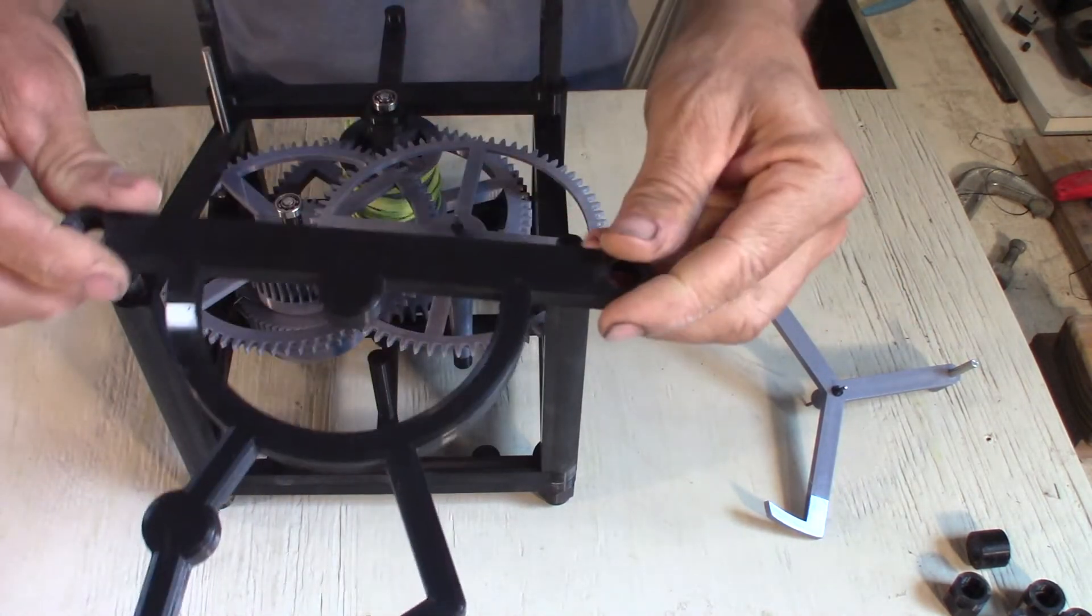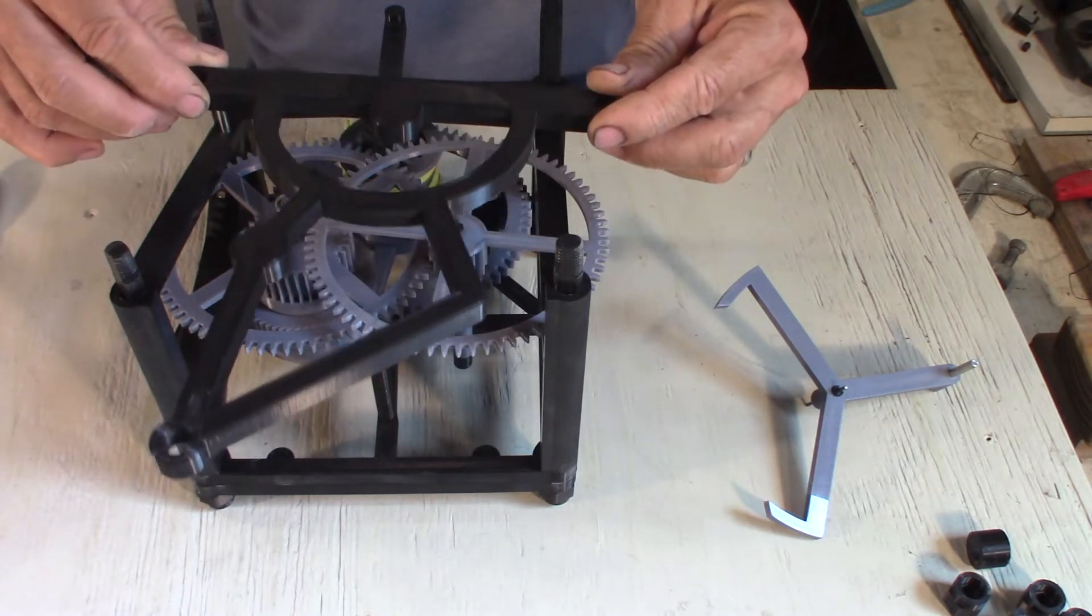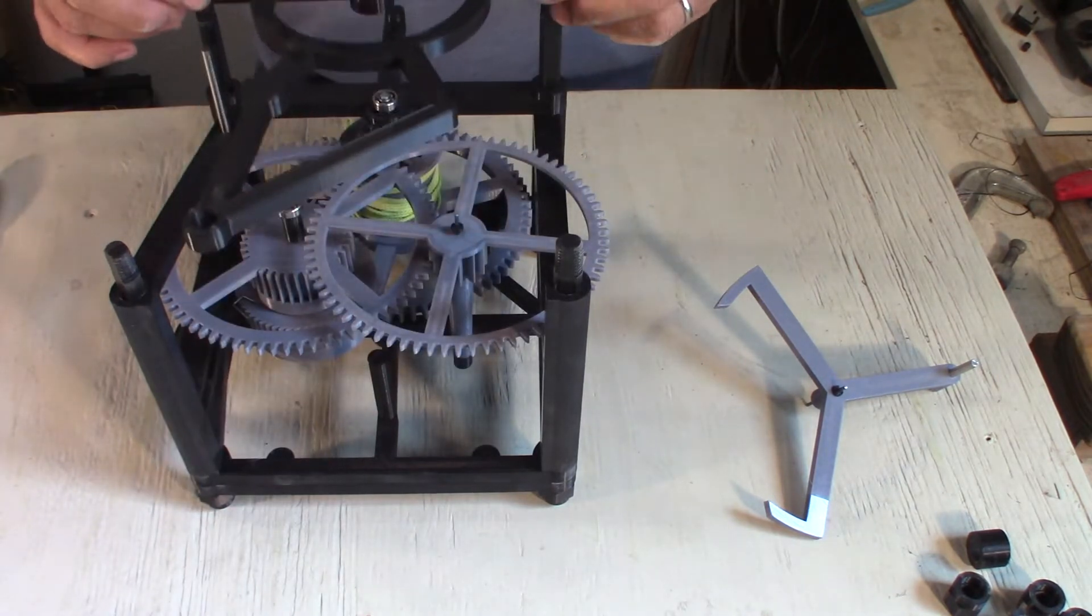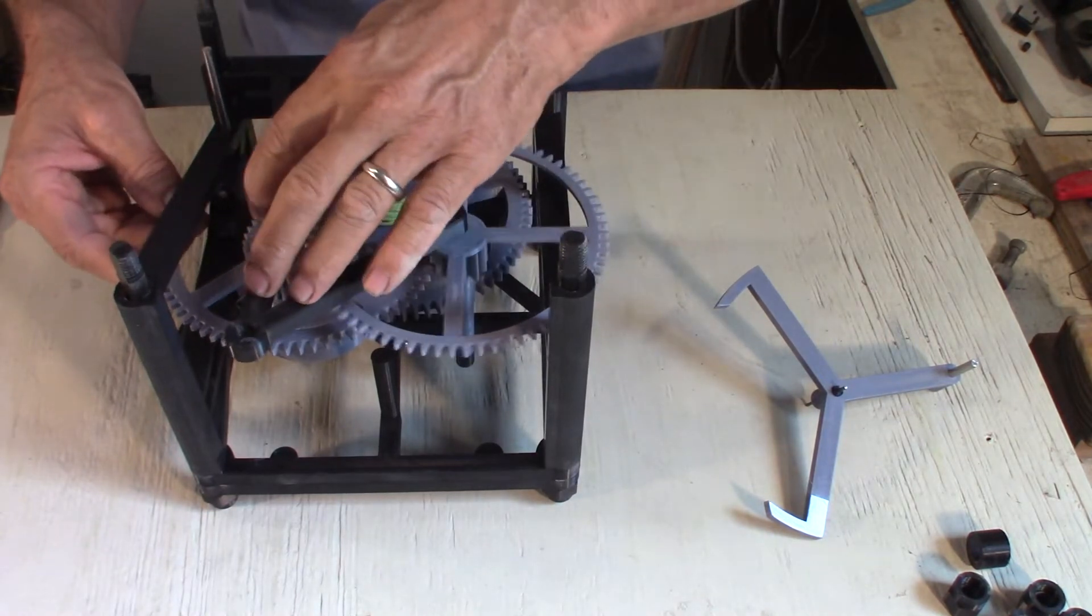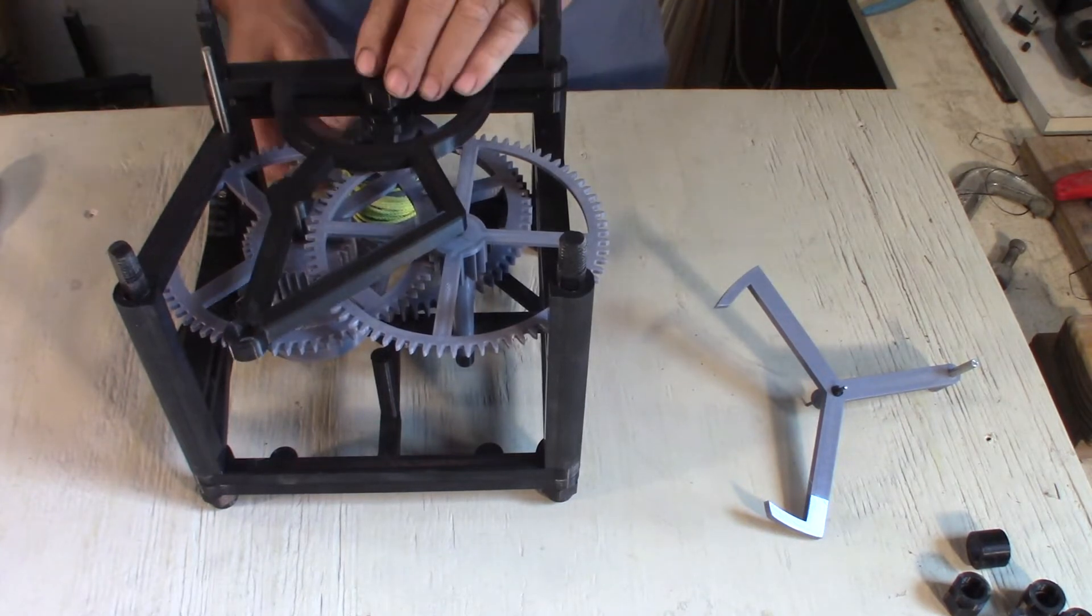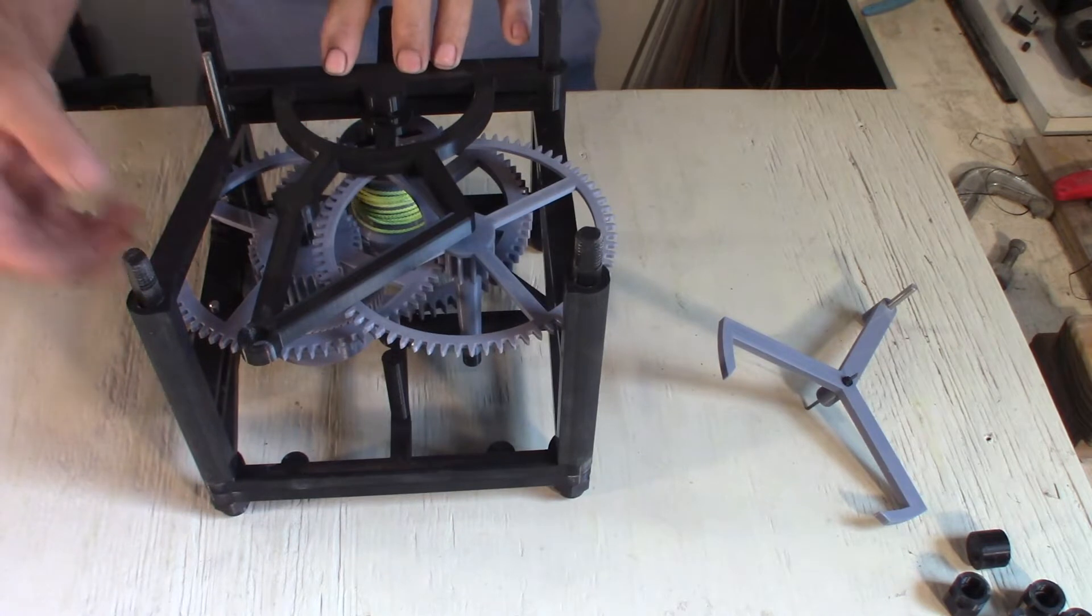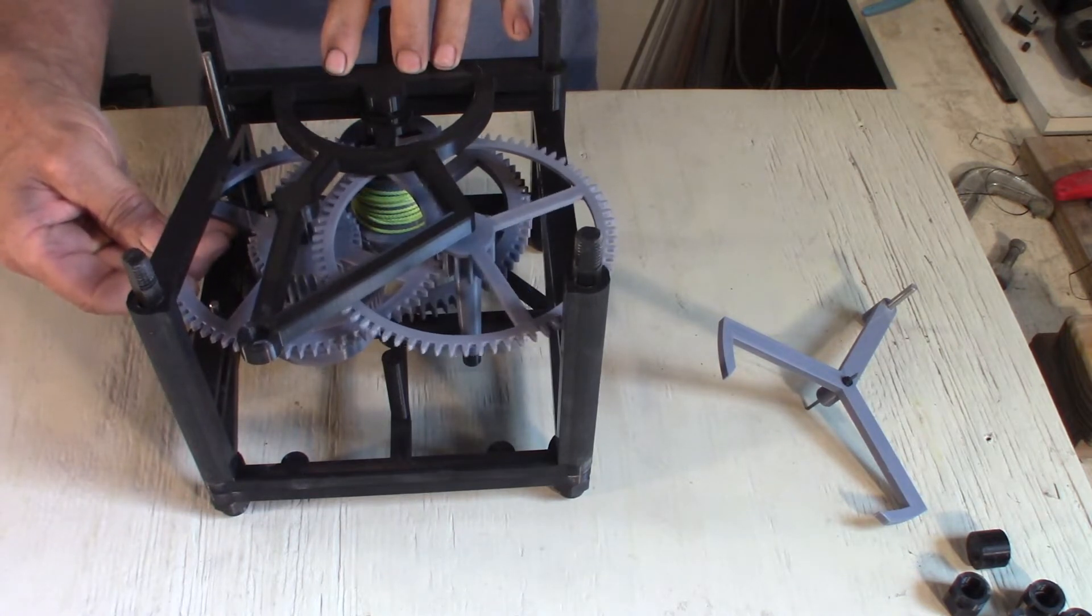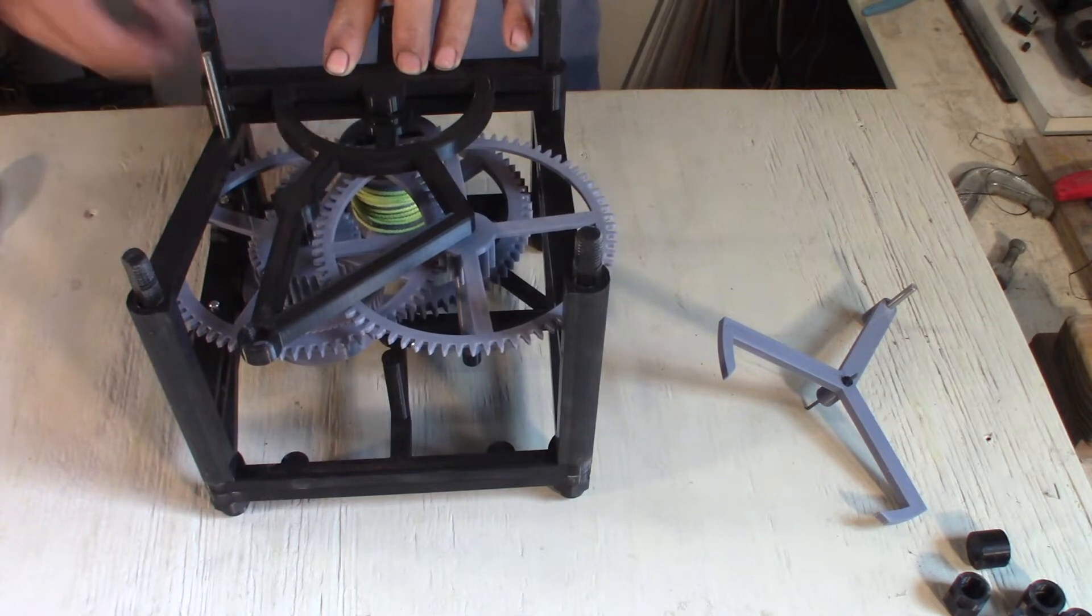Then I have the front escapement frame. Now we can put the back anti-mejet frame, I think it's back frame I call it. We need to line up the bearings and the holes.